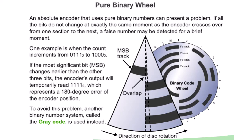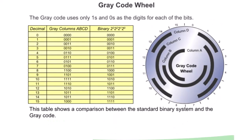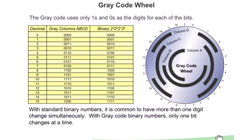Gray code wheel. The gray code uses only ones and zeros as the digits for each of the bits. This table shows a comparison between the standard binary system and the gray code. With standard binary numbers, it is common to have more than one digit change simultaneously.